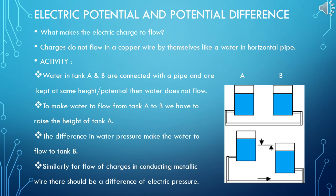Let's understand another physical quantity: electric potential and potential difference. What makes electric charge to flow? Charges do not flow in a copper wire by themselves like water in a horizontal pipe. Imagine a horizontal pipe where water is not flowing. If you want to make water to flow, one end has to have a higher level. So understand that, let us go for an activity. In a figure it is given two tanks: tank A and tank B. Water in tank A and B are connected with a pipe and are at same height or potential, then water does not flow.